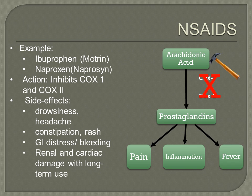Drowsiness, headache, constipation, and rash can also be side effects of NSAIDs. Prostaglandins also play an important part in maintaining renal blood flow in the kidneys, so renal damage and cardiac damage can occur with long-term use. These medications should only be taken as ordered, and we have to closely monitor patients on long-term use. The maximum dose of ibuprofen is 3.2 grams. These medications are often combined with narcotic analgesics, acting synergistically to create sufficient analgesic effect with lower narcotic doses.